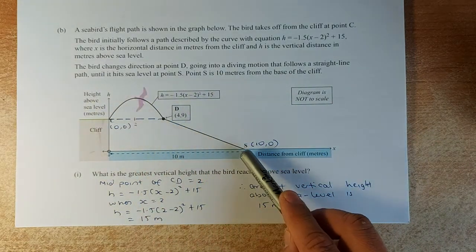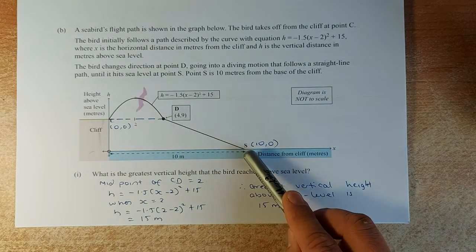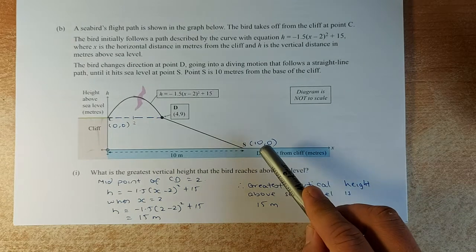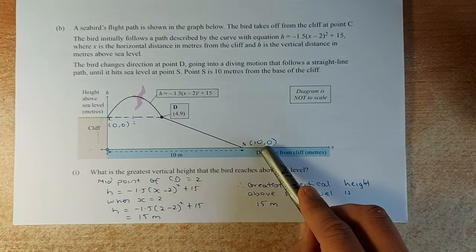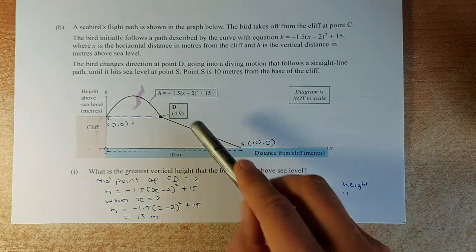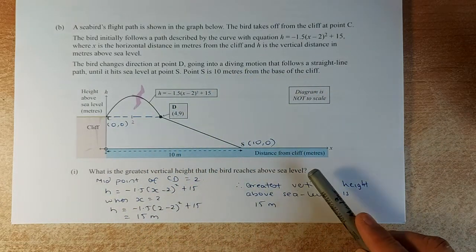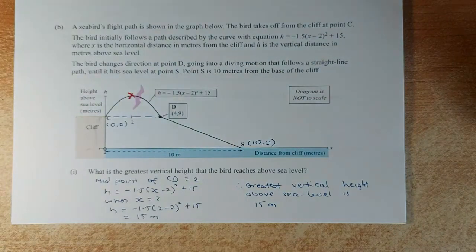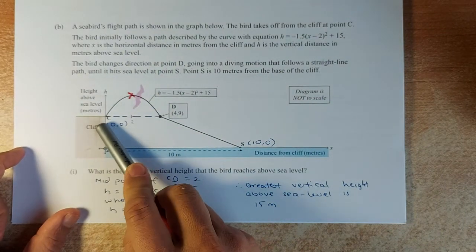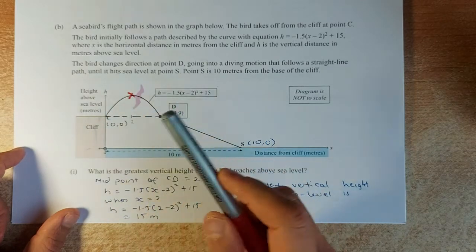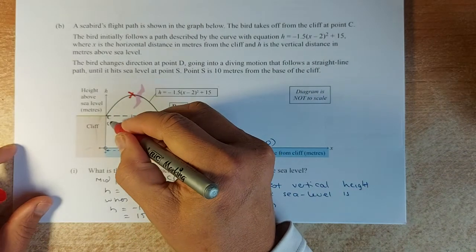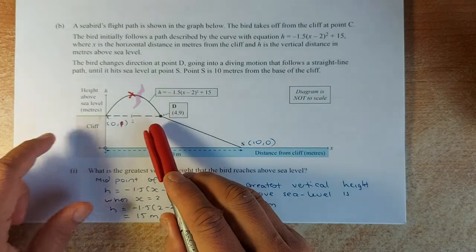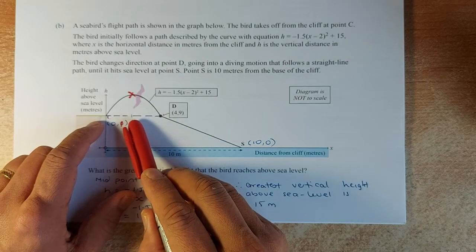So we know point S is 10 meters, so that point is going to be 10, 0, because x is 10 and y is 0. And we are going to find the greatest vertical height that the bird reaches above sea level. So the greatest vertical height is going to be this point here. The coordinate at the cliff C is 0 and some unknown height. And D is at 4, 9. So in between 0 and 4, the middle number is going to be 2.